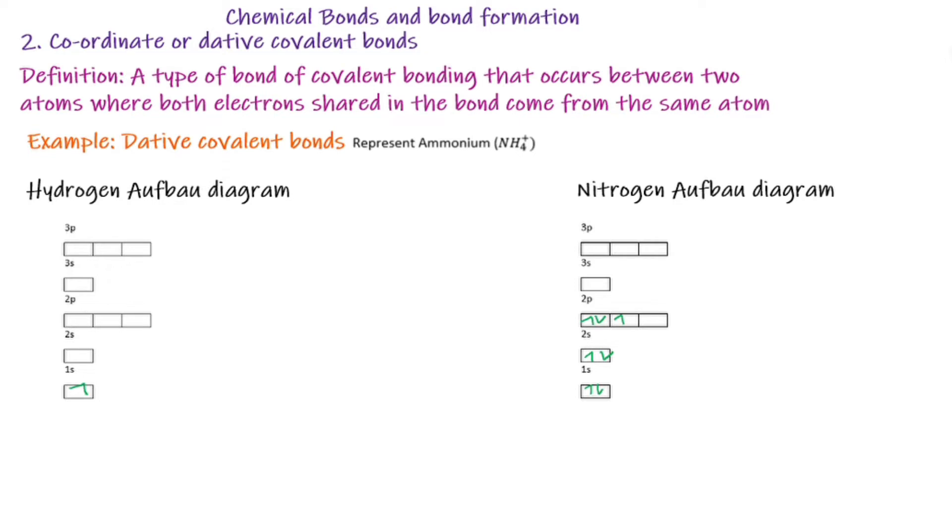If I was to write down electron configuration, I would say for hydrogen we have 1s¹. For nitrogen we will have 1s² 2s², and if you count at 2p we have three, so it's 2p³.